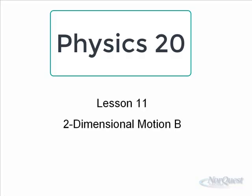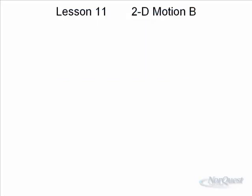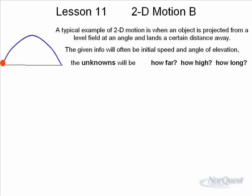Lesson 11, two-dimensional motion. The second type of two-dimensional problem that we'll look at is when you kick a ball or hit a golf ball or any object that's thrown from a level field and lands at the same height, a certain distance away. The given information will often be the initial speed and the angle of elevation. You're not kicking it horizontally or vertically, but at some angle from the horizontal.